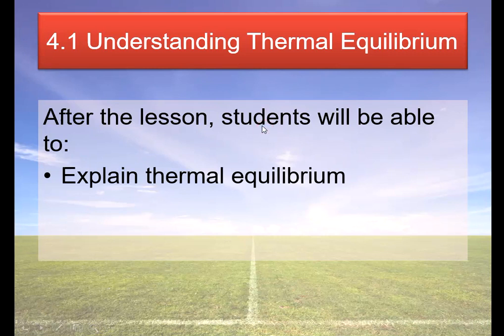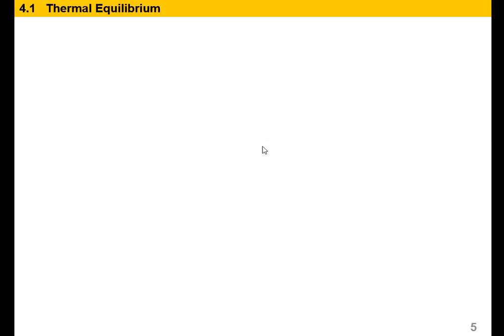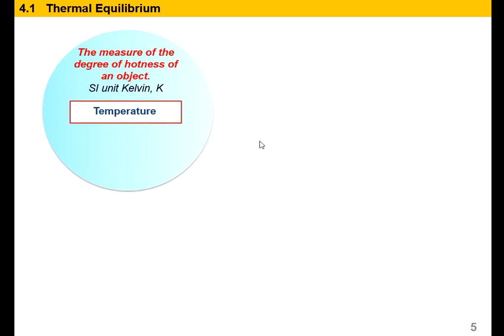After the lesson, you'll be able to explain what thermal equilibrium is, and you'll be able to explain how a liquid-in-glass thermometer works. Before we enter thermal equilibrium, we need to understand a few terms. First is temperature. Temperature means the measure of the degree of hotness of an object. The SI unit for temperature is Kelvin — unlike what most students write, degree Celsius is just a unit, not the SI unit. A hot object is at a higher temperature than a cold object.